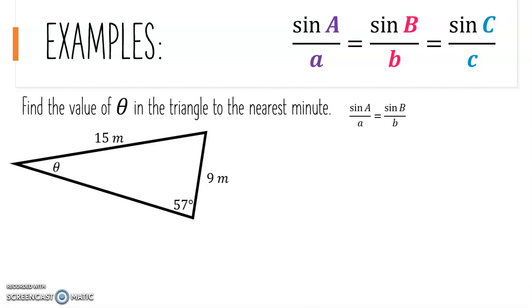We have sine A over a equals sine B over b as our formula. When we substitute in, we get sine theta over 9 equals sine 57 degrees over 15.